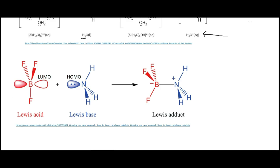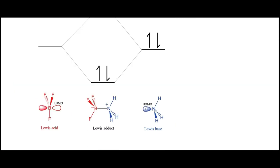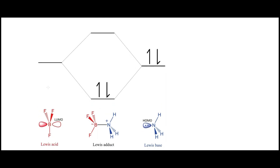Lewis acids don't require H plus exchange. Boron trifluoride BF3 is a Lewis acid with an electron-deficient empty orbital (electrophile), and ammonia NH3 is the Lewis base with a lone pair (nucleophile). They come together to form a Lewis adduct. In molecular orbital terms, the empty atomic orbital on the Lewis acid and the filled atomic orbital on the Lewis base combine to form a bonding pair in the adduct, with the anti-bonding orbital remaining empty.